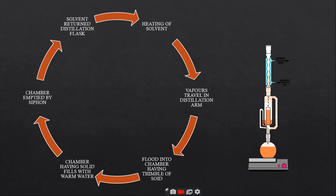Firstly, the solvent is heated to reflux. Solvent vapor travels up the distillation arm and floods into the chamber housing the thimble of solid. Condenser ensures that any solvent vapor cools and drips back down into the chamber housing solid materials.